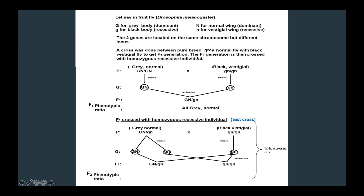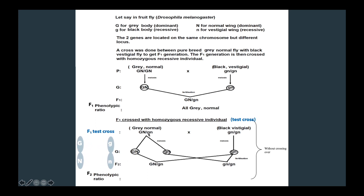The F1 generation is then crossed with a homozygous recessive individual — this is a test cross. The F1 individuals are all heterozygous, with one chromosome bearing capital G capital N and another bearing small g small n. Without crossing over, this individual can only produce two types of gametes: GN and gn. The homozygous recessive individual produces only gn gametes. Fertilization produces only two types of offspring: grey normal and black vestigial.